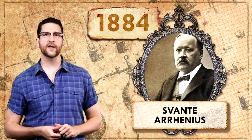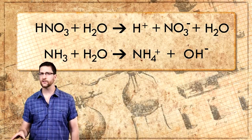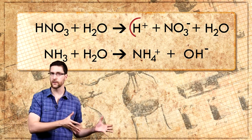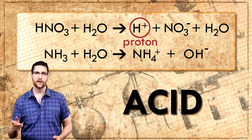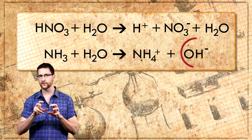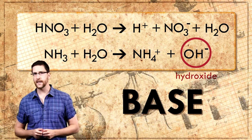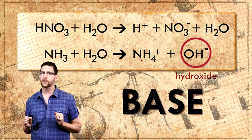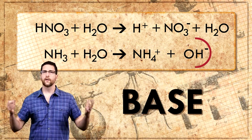It took more than 100 years, but in 1884, the swarthy Swedish chemist Svante Arrhenius came up with the first modern definitions of acids and bases. Look at this handsome guy! His definition hinged on how the acid or base dissolves in water. He noticed that if the chemical produces positively charged hydrogen atoms, also known as protons, it's an acid. If the chemical produced negatively charged molecules of oxygen and hydrogen, also known as hydroxide, that chemical is a base. And if neither protons nor hydroxide ions are produced, the chemical is neutral.